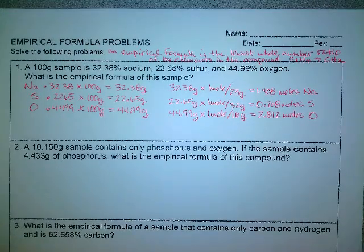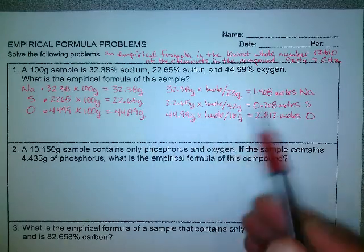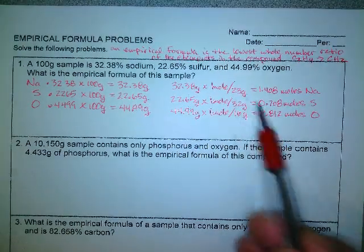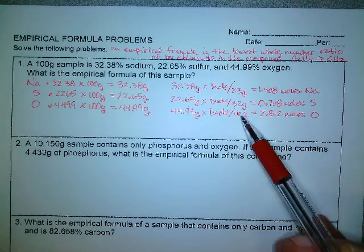And then 44.99 grams times one mole divided by 16 grams, and I get 2.812 moles of oxygen. So now I've turned all the grams into moles. That's really, once I have grams, that's the first big step. Turn them into moles. And of course these numbers I got off the periodic table, and I used the rounded whole number amounts for the different elements.